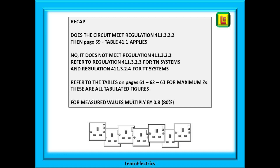A quick recap: does the circuit meet regulation 411.3.2.2? If it does, then page 59 table 41.1 applies. If not, refer to regulation 411.3.2.3 for TN systems or regulation 411.3.2.4 for TT systems. Then to find the maximum ZS for the circuit, refer to the tables on pages 61, 62, or 63. These tables all show tabulated figures. To find the measured values, multiply the numbers in these ZS tables by 0.8 — this is the 80% rule — and this is the ZS that you should measure with your test meter.